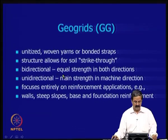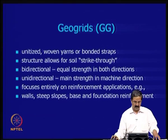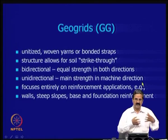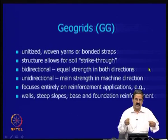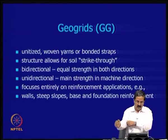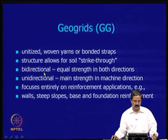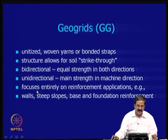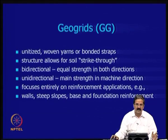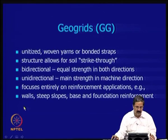Geogrids are bi-directional — equal strength in both directions, which is useful for bearing capacity problems — or unidirectional, where main strength is in the machine direction. These are polymer chains; if you stretch them, the strength increases in that direction. Geogrids focus entirely on reinforcement applications: bearing capacity improvement, reinforcement in walls, steep slopes, and base and foundation reinforcement.